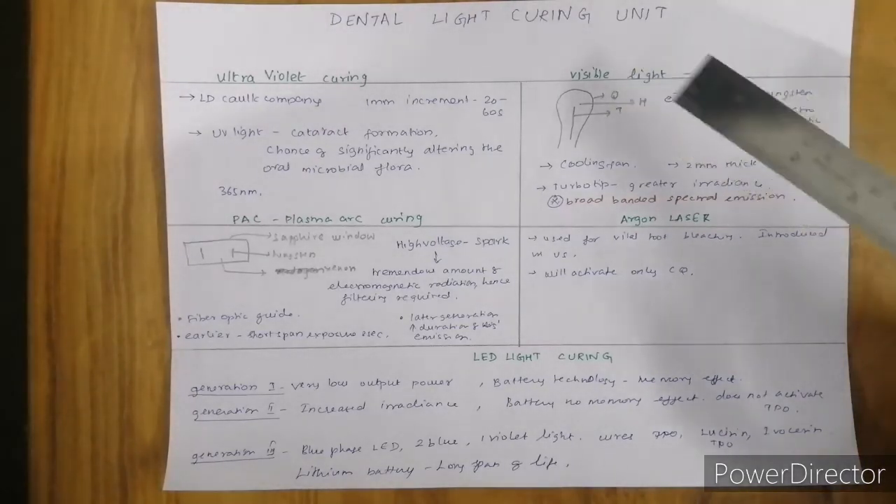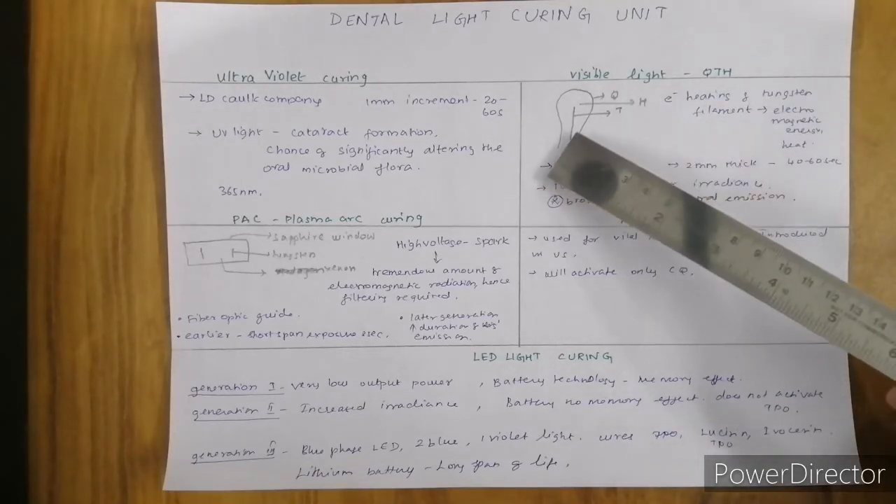Now let us discuss visible light. We have quartz tungsten halogen - a quartz encasing with a bulb, tungsten filament, and the bulb is filled with halogen gas.